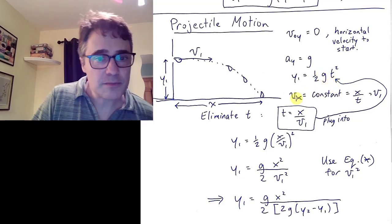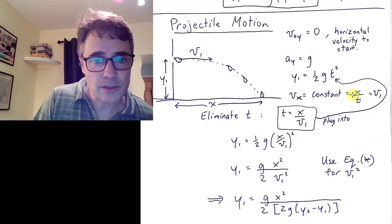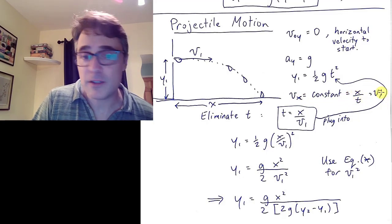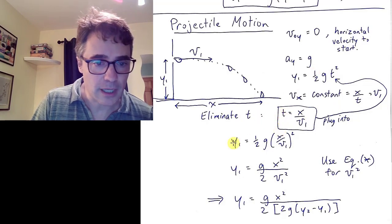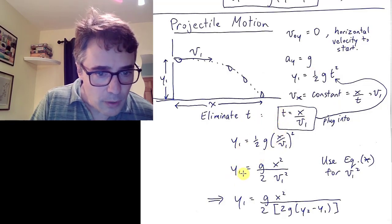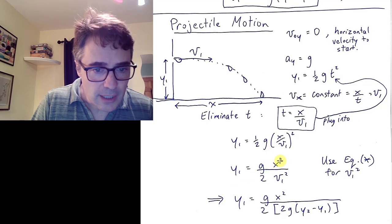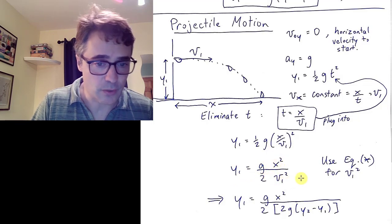The vertical motion is just Y1 equals 1 half G T squared, because it starts with 0 Y velocity and goes downward with acceleration G. The X motion is constant, Vx equals X over T. And that's V1. I can eliminate T by solving for T and plugging it in. I get Y1 equals G times X squared over 2 times V1 squared.